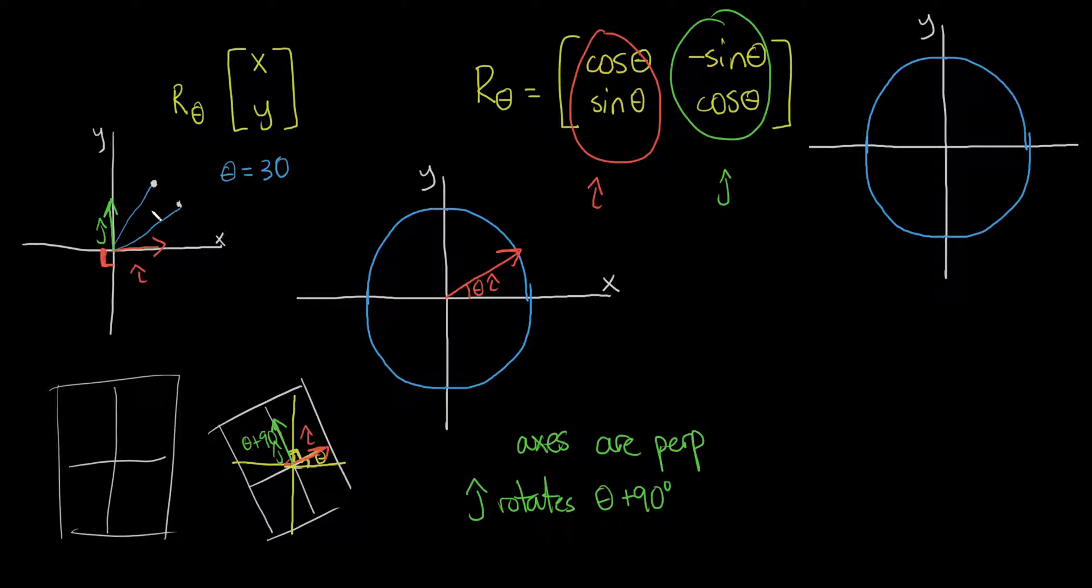This implies that j rotates by theta plus 90, right? And i, i-hat, rotates by theta. So, we have theta and then theta plus 90 to remain perpendicular.